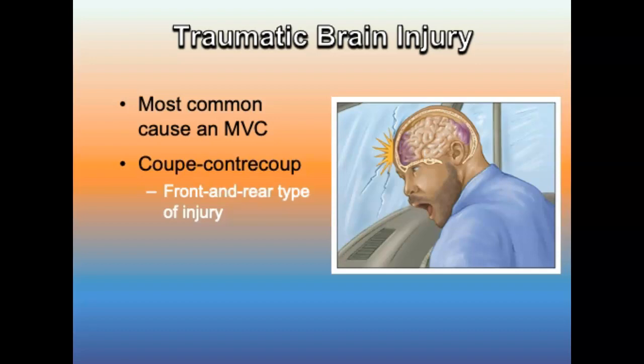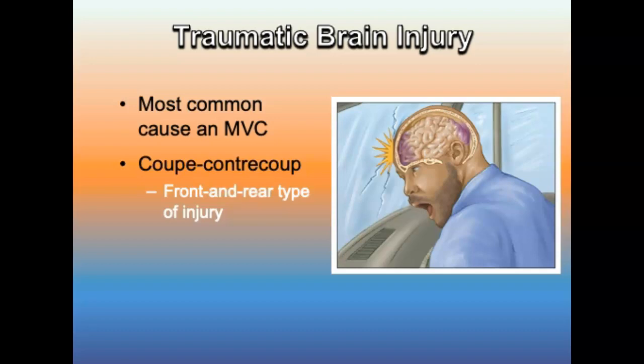The most common cause of brain injuries in motor vehicle accidents is coup-contrecoup injury. The passenger's head hits the windshield, the brain moves forward striking the inside of the skull, then the head falls back and the brain slams the rear of the skull. This type of injury may occur on opposite sides in a lateral crash. The injured brain starts to swell due to dilated cerebral vessels and increased cerebral fluid — cerebral edema. Increased ICP can be caused by accumulation of blood within the skull or brain swelling, which squeezes the brain against bony prominences within the cranium.